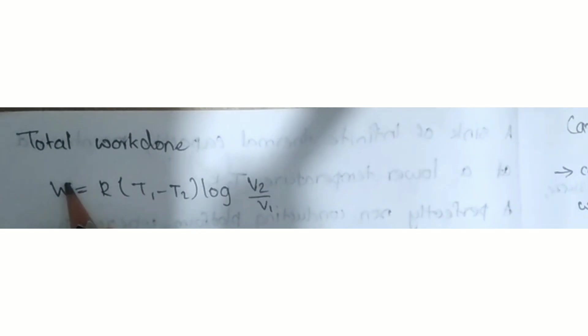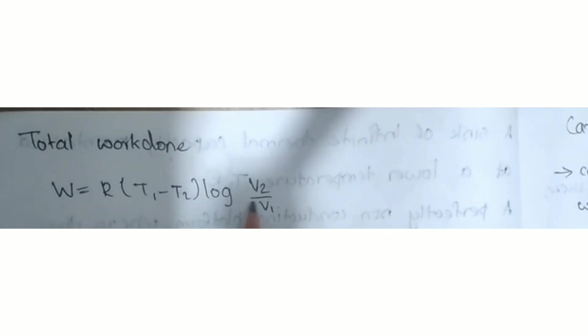Total work done by the Carnot cycle is equal to R times (T1 minus T2) times log(V2/V1).